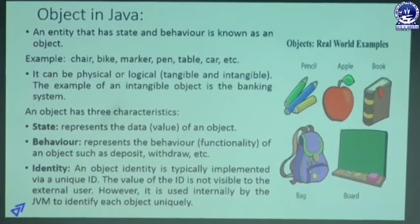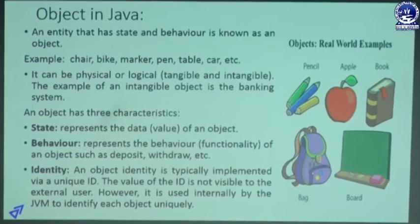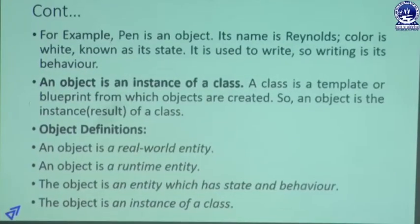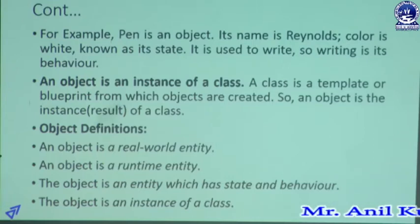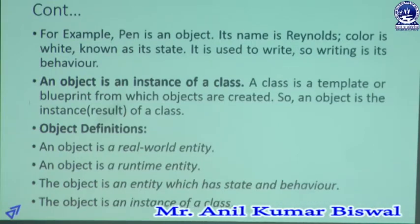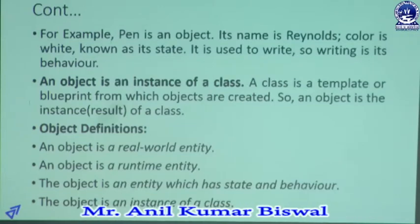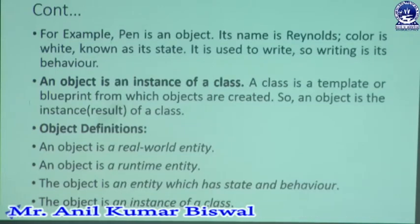An object is only created with the help of a class. For example, a pen is an object and its name is Reynolds. Its color is white — that is known as its state. It is used to write, so writing is its behavior.